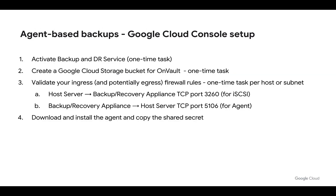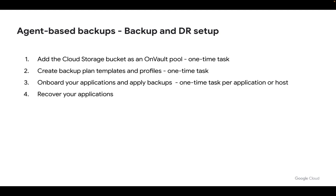In terms of setup, we need to activate the backup and DR service, create our Google Cloud Storage bucket to hold those on-vault backups, and validate our firewall rules. Firewall rule 3260 generally does not need to be added as it has already been configured, but firewall rule 5106 almost always needs to be added because it allows ingress from the backup and recovery appliance into TCP port 5106 running on your server. Once setup is complete, we add the cloud storage bucket as an on-vault pool, create our backup plans and templates, onboard our applications, and apply backups. We then wait for our backups to complete and start using them for mounts or restores as required. All of these steps will be covered in this playlist series.